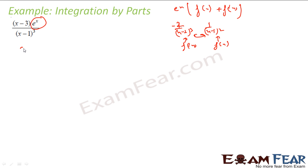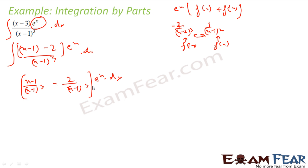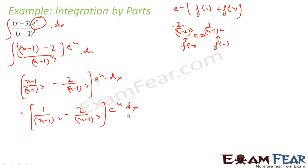What I can do is just break this expression. I can write the numerator as (x−1) − 2 divided by (x−1)³, giving e^x times [(x−1)/(x−1)³ − 2/(x−1)³] dx. That simplifies to e^x times [1/(x−1)² − 2/(x−1)³] dx.